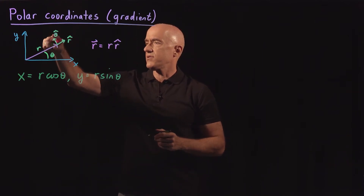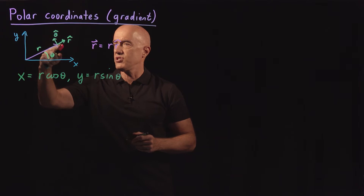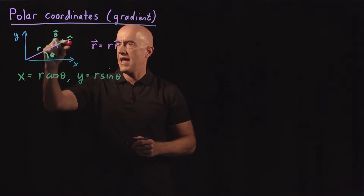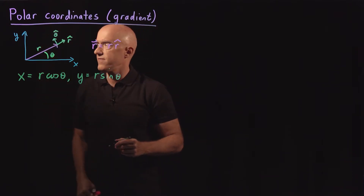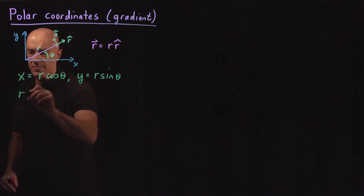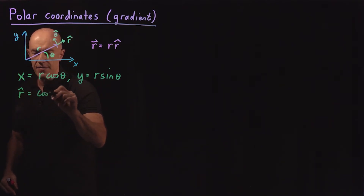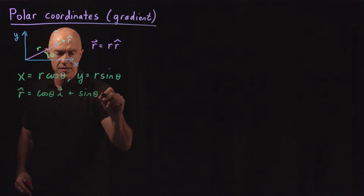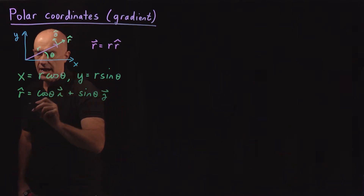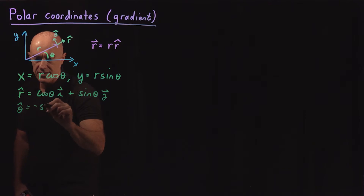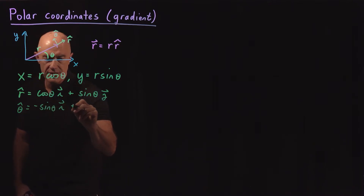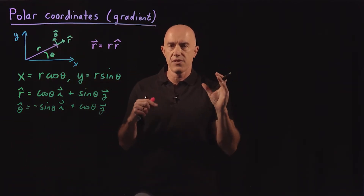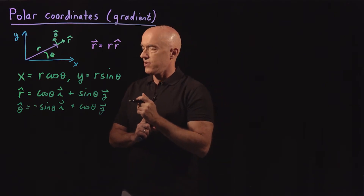These unit vectors, looking at the i and j unit vectors, the r-hat and theta-hat unit vectors are rotated through an angle theta from the i, j unit vectors. So we can write r-hat equals cosine theta î plus sine theta ĵ, and theta-hat equals minus sine theta î plus cosine theta ĵ. This is just a rotation of the i, j unit vectors through an angle theta.